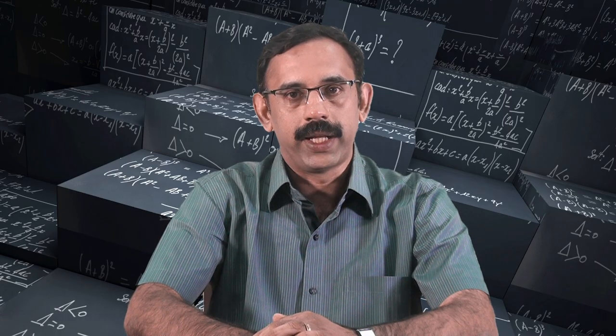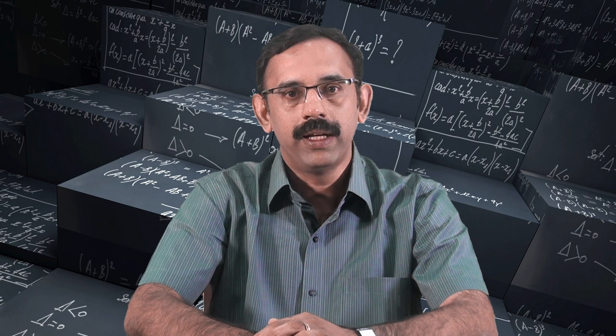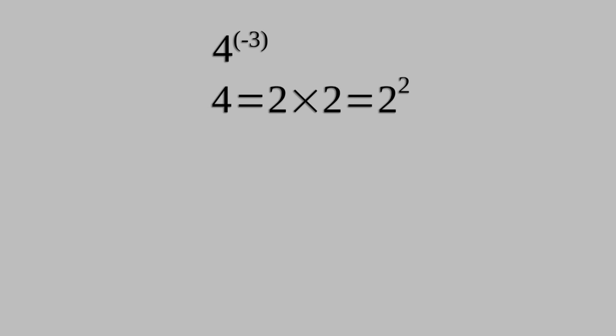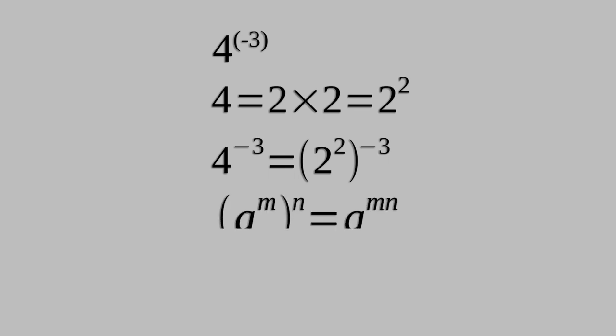Using the laws of exponents, we can change the base of a number expressed in exponential form. Let us express 4 raised to minus 3 as a power with base 2. We know that 4 equals 2 times 2, which is 2 square. Hence, 4 raised to minus 3 is 2 square whole raised to minus 3. Since a raised to m whole raised to n equals a raised to mn, 4 raised to minus 3 is equal to 2 raised to minus 6.